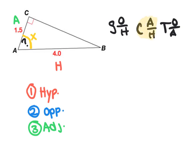If I set up my ratio, it's cosine of x equals our adjacent on the top which is 1.5 over the hypotenuse which in this case is 4.0.